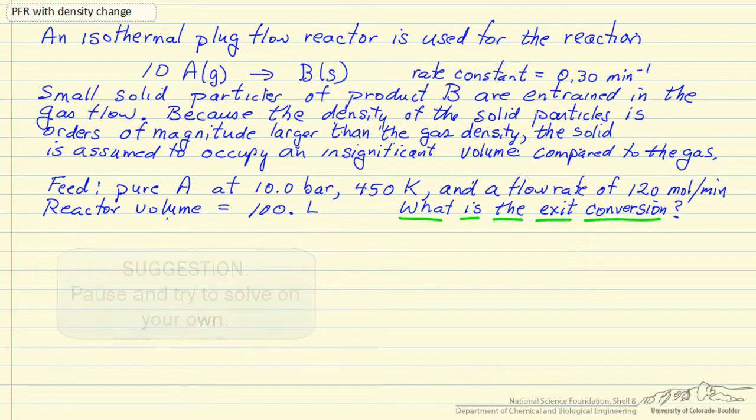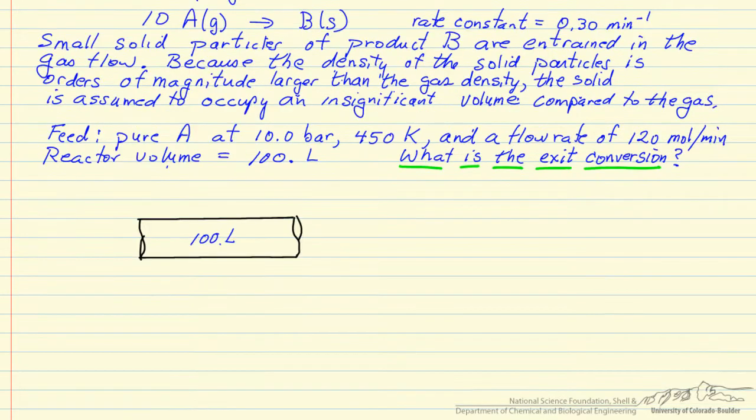First thing we're going to want to do is draw a diagram to represent the system. So this represents the tube, and coming in is a gas. It's at 450 Kelvin and 10 bar, and the molar flow rate, so F will be used to indicate the molar flow rate, subscript 0 is the inlet value, is 120 moles per minute.